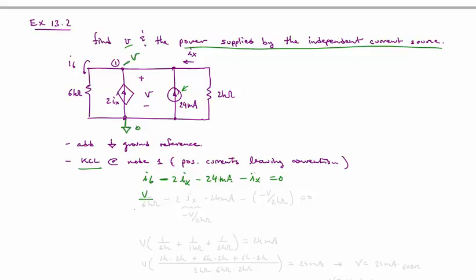We now replace I6 with an expression using Ohm's law, such that we can express the current in terms of the voltage. So we have V over 6 kilo ohms. And then for IX, we're going to substitute. Let's see what IX is. IX is the current that's flowing through this 2 ohm resistor.